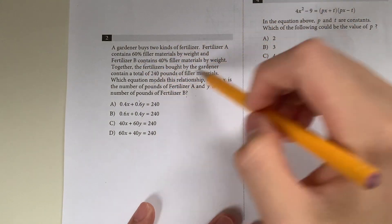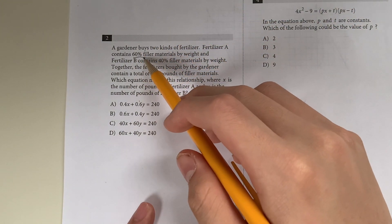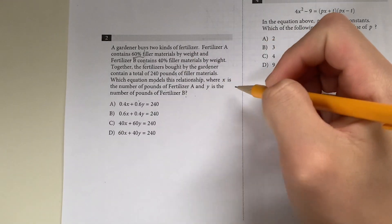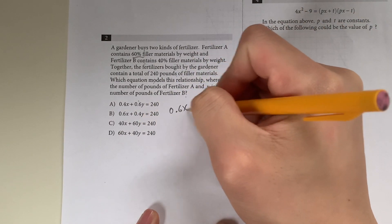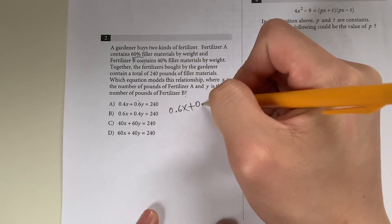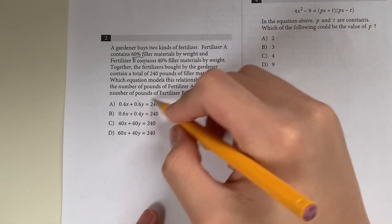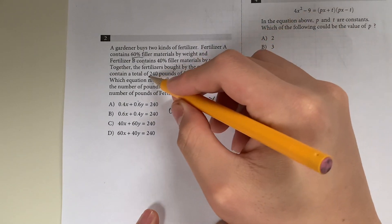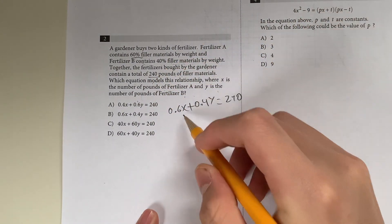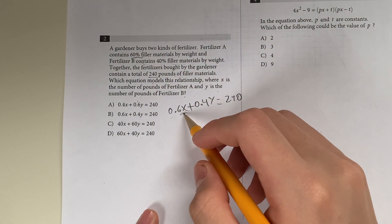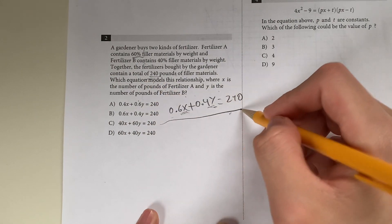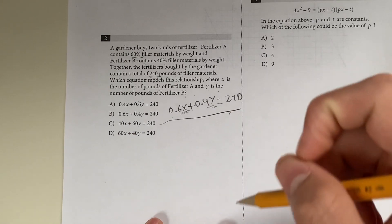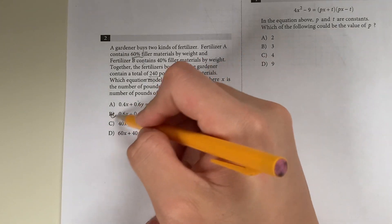Which equation models the relationship where X is the number of pounds of fertilizer A and Y is the number of pounds of fertilizer B? Fertilizer A contains 60% filler material, so that's 0.6X plus the 40% filler material by B, 0.4Y. That gives you a total of 240 pounds. This is your equation, and your answer should be B.